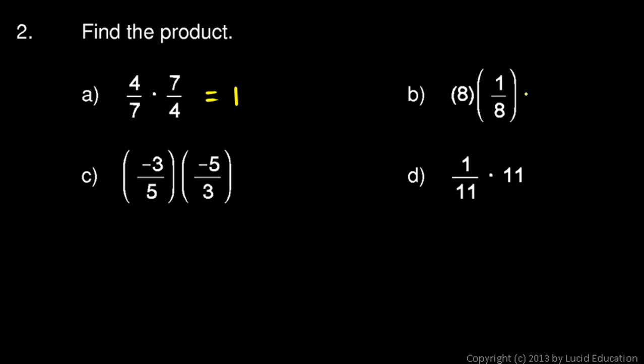And 8 and 1/8 are reciprocals, so those multiply together to equal 1. And again you can think of the 8 here as being 8 over 1, so the 8 in the numerator and in the denominator cancel out. But if you just remember that any number multiplied by its reciprocal is 1, you can just go straight to the answer.